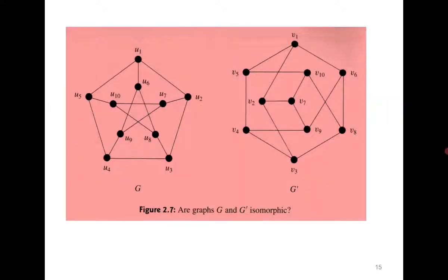Let's see some more examples. For example, if you see these two graphs, it is not difficult to establish a bijection between G and G dash. You can define φ(ui) = vi.